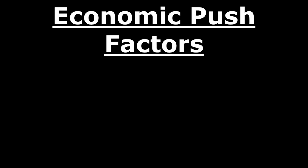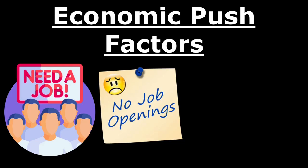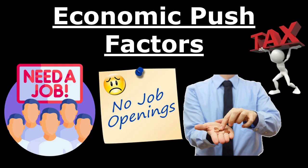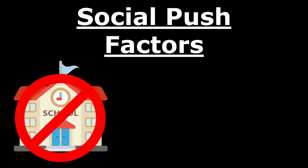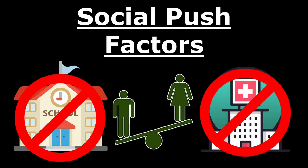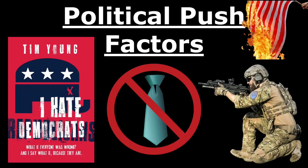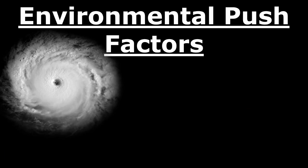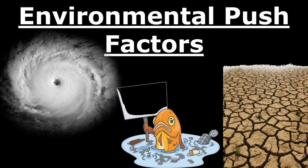Now let's get into push factors, starting with economic. This could be things like no jobs available in an area, getting laid off, making low wages, or higher taxes. Social push factors include no access to schooling or healthcare, or discrimination against your ethnicity, race, or gender. Political push factors include discrimination and hate toward a political party, cruel and unusual punishments, war, and an unstable government. Environmental push factors include natural disasters, pollution, unarable land, loss of soil fertility, unusable soil, and drought.